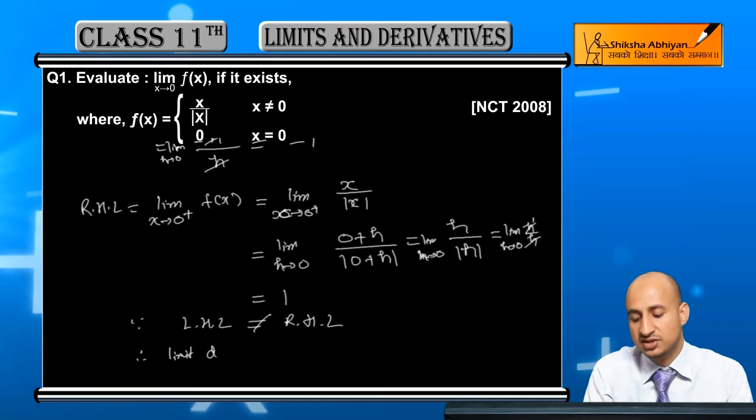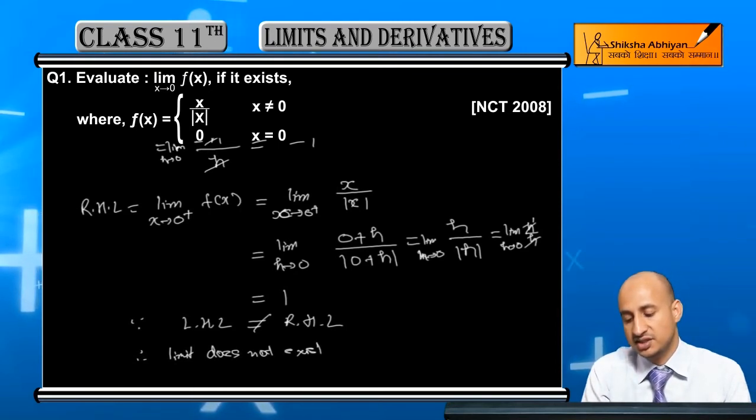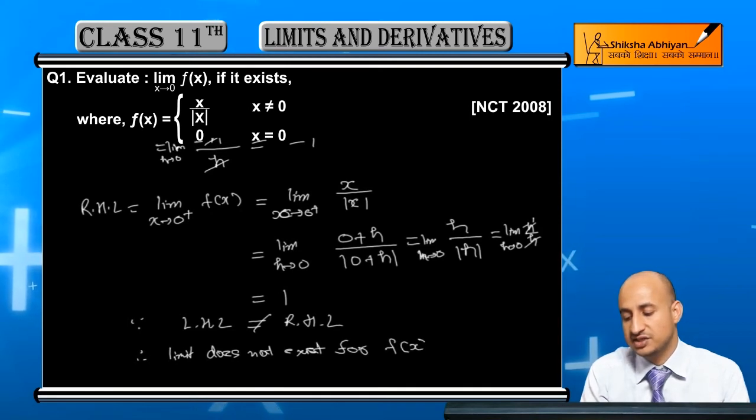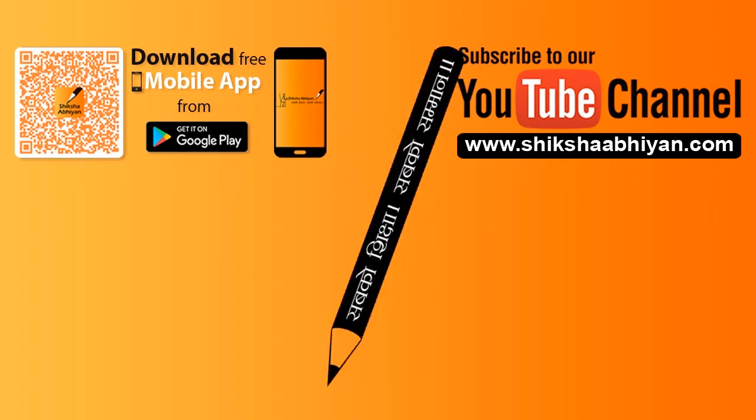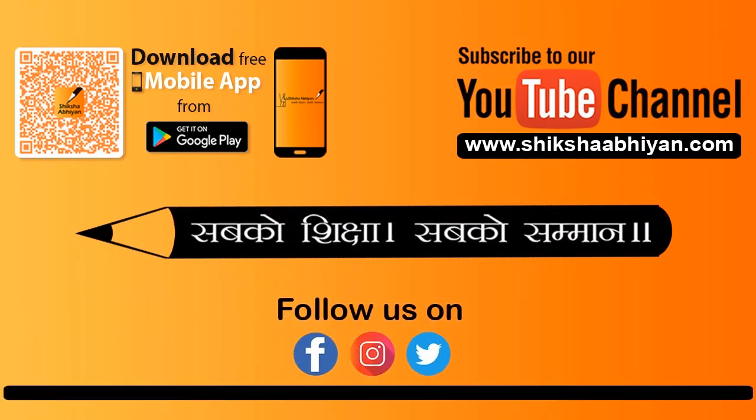Therefore, the limit does not exist for f(x). The limit can exist only if left hand limit equals right hand limit.